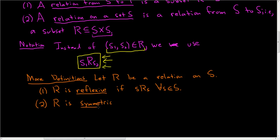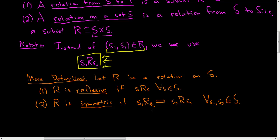We say a relation is symmetric if whenever s1 is related to s2, then s2 is related to s1, and this has to be true for all s1, s2 in S.